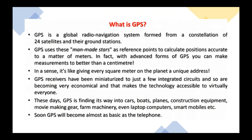What is GPS? GPS is a global radio navigation system formed from a constellation of 24 satellites and their ground stations. GPS uses man-made stars — that is, satellites — as reference points to calculate positions accurate to a matter of meters. In fact, with advanced forms of GPS you can make measurements to better than a centimeter. In a sense, it is like giving every square meter on the planet a unique address.